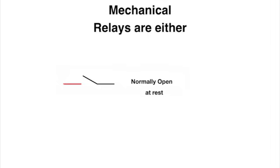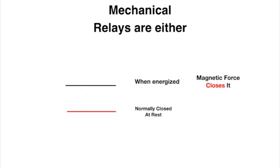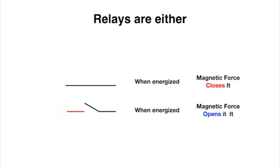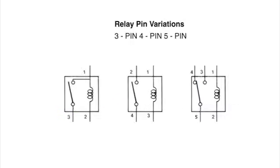Now mechanical relays come in two forms. They are either normally open, and when energized, the magnetic force closes the contacts, or they are normally closed. And when energized, the magnetic force opens the contacts and stops current flow. And depending upon the manufacturer and the application, they can have either 3, 4, or 5 pins. They all work the same way. The difference between them is simply where they route power once they are energized.